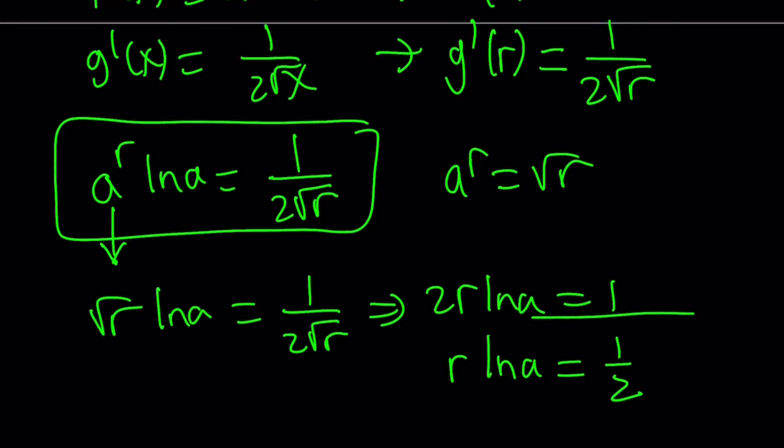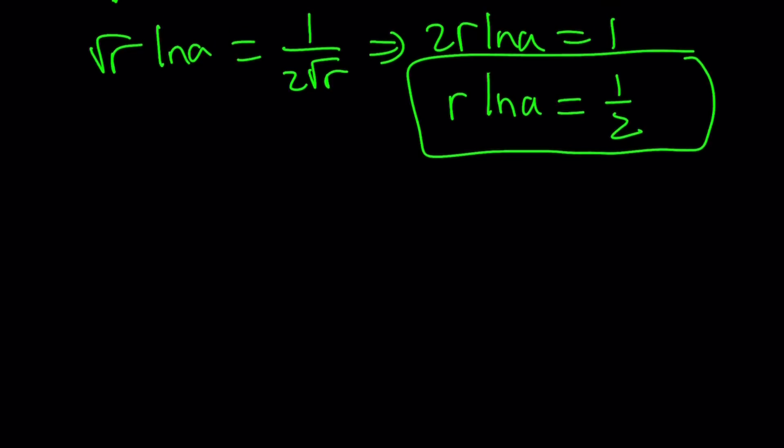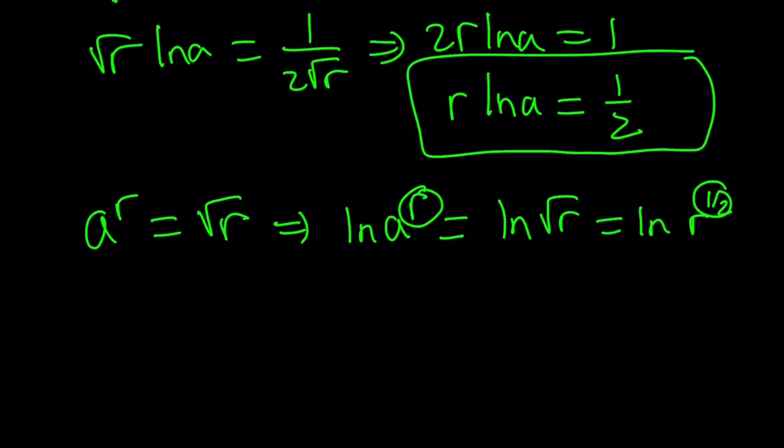Now, this may not look very helpful because we have two variables, but that's okay. We're going to use it efficiently. How? We're going to take this expression one more time: a to the power r equals square root of r. And then ln both sides. And that makes a lot of sense. ln a to the power r equals ln square root of r, which can be written as ln r to the power 1 half. Now, by using the power rules, we can move these powers to the front. And this gives us r ln a equals 1 half ln r.